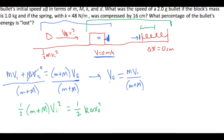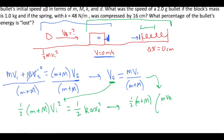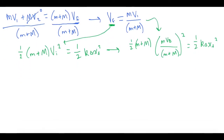We solved for v final from the momentum step, which now becomes our initial velocity here. Plugging in mv_b over (m + M), that gives us one-half (m + M) times [little m times v_b divided by (m + M)] all squared, equal to one-half k delta x final squared. We want to isolate v_b, the initial speed of the bullet.